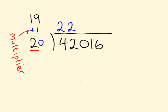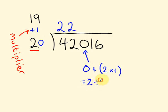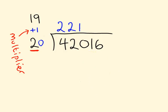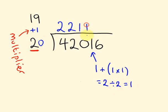Now we've got the 0. We add the previous answer digit (2) times the multiplier (1), so 2 times 1 is 2. Zero plus 2 equals 2. Then 2 divided by 2 equals 1 — that's the next part of our answer. Moving on, we've got the 1. We add 1 times the multiplier: 1 times 1 is 1. Then 1 plus 1 equals 2, and 2 divided by 2 equals 1. So that part of our answer is 1.